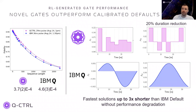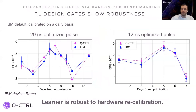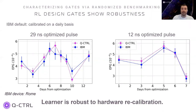On the right, you can see the I and Q components of the optimized and the default pulses. We can go even shorter, up to 12-nanosecond pulses — three times shorter than the IBM default — achieving similar performance to the IBM default pulse. The IBM default is recalibrated on a daily basis. Here you can see the errors from randomized benchmarking across many days. We always use the same Q-Control optimized RX90 from day zero and compare it to the most updated daily-calibrated IBM default. Both with the 29 and 12-nanosecond pulses, we achieve similar or better performance than the IBM default over many days without recalibrating.